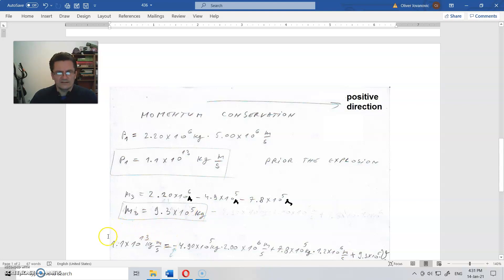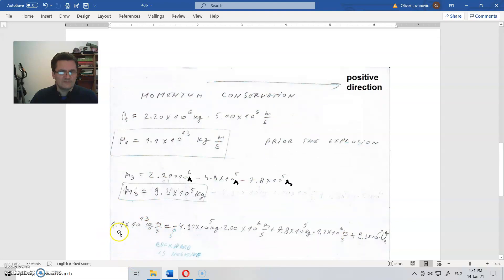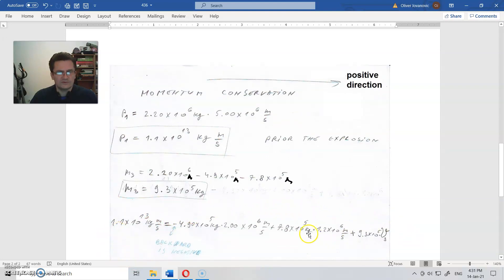Okay, and this is the momentum prior to the explosion. This is the momentum after the explosion. So this part was going backward in the negative direction, and that is why we have to place minus here. So this mass times its speed.